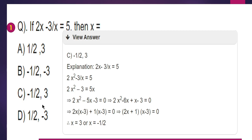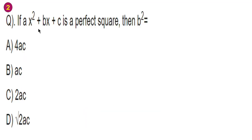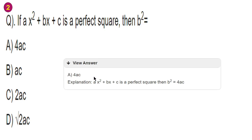Second problem: if ax squared plus bx plus c is a perfect square, then b squared is equal to? This is a direct question. For a perfect square, b squared equals 4ac. So option A is the right answer.